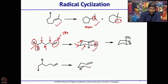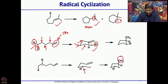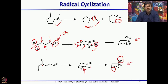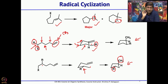You will also get the other diastereomer as a minor product, but these are the major regio- and stereochemical outcomes. The regiochemical outcome is based on stability of the radical, whereas the stereochemical outcome is based on putting the alkyl substituent in the equatorial position, drawing the chair-like conformation, and then examining the final outcome.